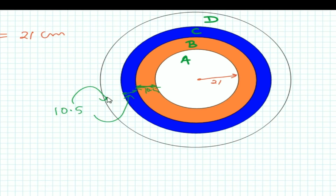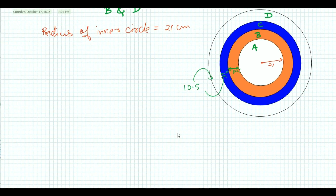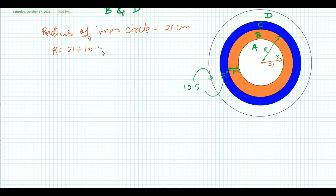The thickness of each region is 10.5 centimeters — this one, this one, and this one. The width is equal in all cases. To calculate the area of region B, I will use the formula for concentric circles, taking the outer radius as capital R and the inner radius as small r. So capital R = 21 + 10.5 = 31.5 centimeters, and small r = 21 centimeters.